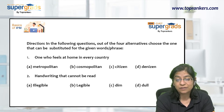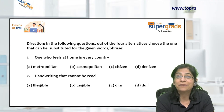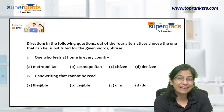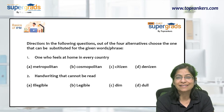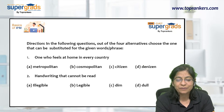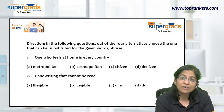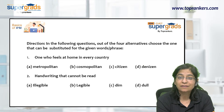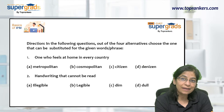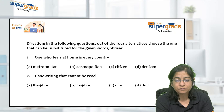The first one is: 'One who feels at home in every country.' That is — someone to whom every country feels like their own. They don't think 'I'm a USA citizen' or 'I'm Indian' or 'I'm Japanese.' They feel everything is theirs and they belong to everyone. Now let's look at the options. Metropolitan means something typical of a big city or related to a busy city.